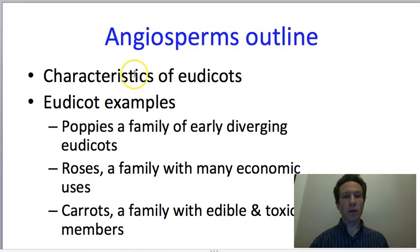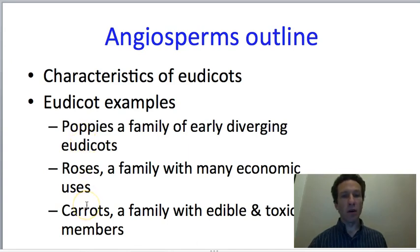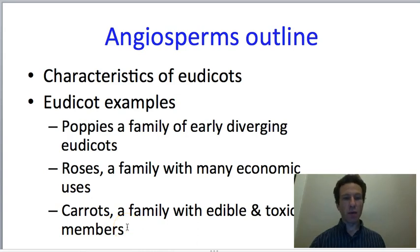We'll start by talking about general characteristics of this group, which will be material you're familiar with because it is the opposite of what we said the monocots show. We will then talk about three families within the eudicot group: the poppy family, which diverged fairly early; the rose family, which is in one of the two large sets of families; and the carrot family, which has edible as well as toxic members, within the other large group of eudicot families.